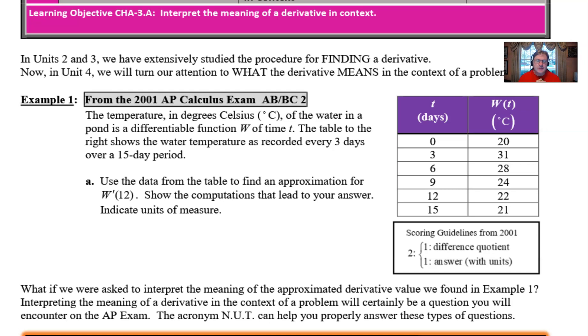There's always three free response questions nowadays that are common to both exams. And this question read as follows: the temperature in degrees Celsius of the water in a pond is a differentiable function W of time T. The table to the right shows the water temperature as recorded every three days over a 15 day period. And if you just look over here at the table, you can see that we increment our time in three day periods as the problem indicated.